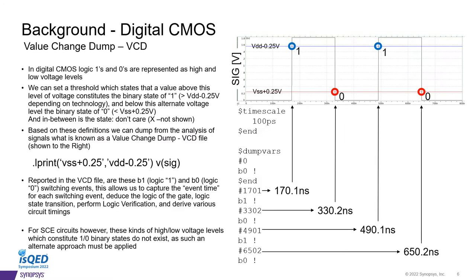Thanks, Sam. Before we go further into superconducting electronics, let's go over some background. In digital CMOS logic families, binary 1s and 0s are represented as high and low voltage levels. In HSPICE, we can define a threshold which states that if the signal's voltage goes above a specific level, it constitutes a logic 1. Conversely, if it falls below an alternate level, a logic 0.